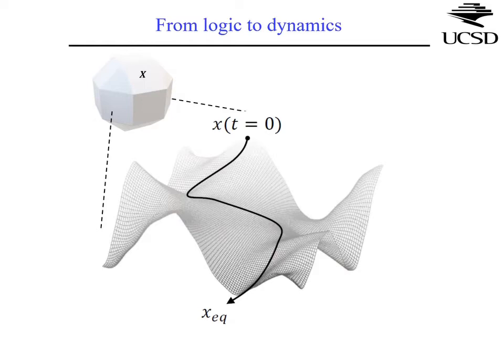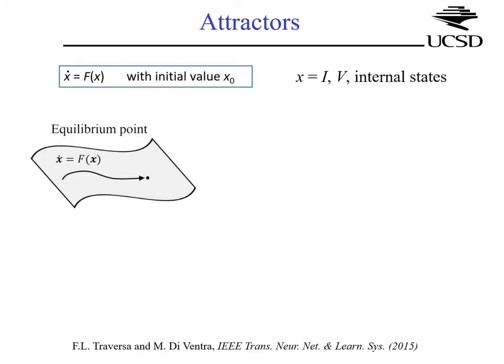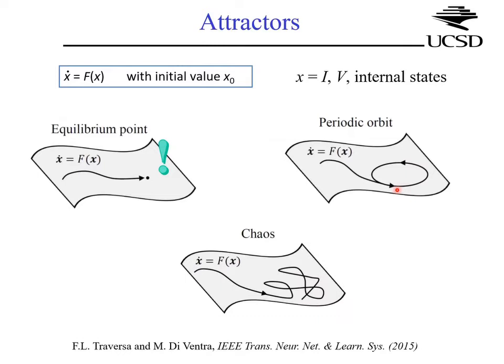You start from a problem with a discrete set of states, transform them into continuous variables such as voltages, then enlarge the phase space by adding memory variables. These memory variables eliminate any local minima, leaving only the equilibrium points which are the solutions to the problem. You may also encounter periodic orbits or chaos, but we have proved that the dynamical systems we designed do not exhibit chaos — they are topologically constrained — and we proved case-by-case that they have no periodic orbits.